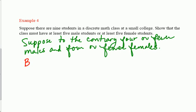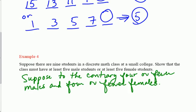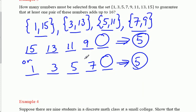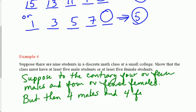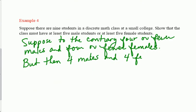It sure does. But then, four males and four females would mean—so that's at the most, because it says four or fewer, but let's say at the most I have four males and four females—that would mean there are eight people in the class.